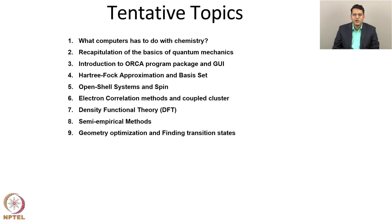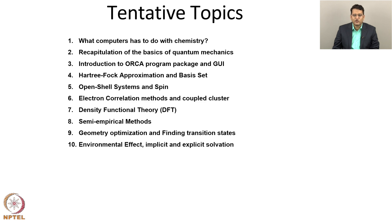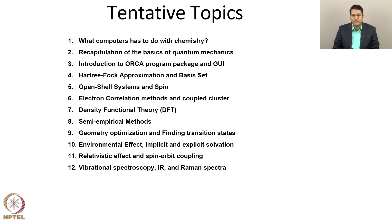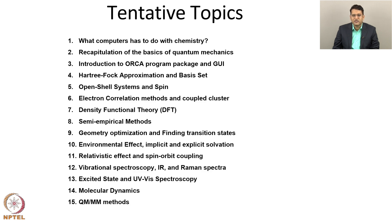We are going to learn about some empirical methods which can do calculations very rapidly. As in chemistry we often deal with reactions, we are going to learn about geometry optimization and how to find transition states, so we can calculate reaction rates. Most chemical processes take place in the presence of an environment, so we are going to learn about environmental effects — implicit and explicit solvation both. For heavy elements there will be relativistic effects, and we will learn how to take care of them, including spin-orbit coupling. Chemistry involves many kinds of spectroscopy; we are going to cover at least IR, Raman, and UV-visible spectroscopy. Many interesting phenomena happen in a dynamic way, so we are going to learn about molecular dynamics, and if you are interested in biomolecular simulation, you need to know about the QM/MM method.